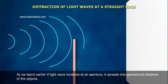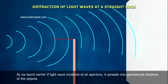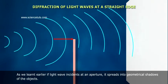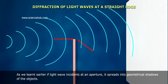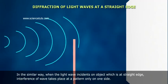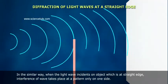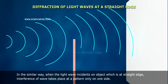As we have learnt earlier, if light wave incidents at an aperture it spreads into geometrical shadows of the objects. In a similar way, when the light wave incidents on an object which is at a straight edge, interference of wave takes place at a pattern only on one side.